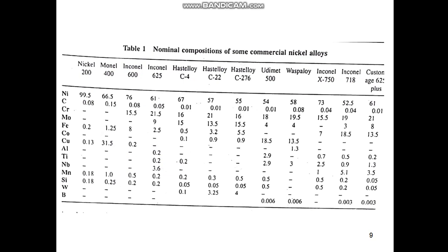This table provides the nominal composition of commercially available nickel-base alloys, ranging from Nickel 200, Monel 400, Inconel 600, Inconel 625, Hastelloy C4, C22, C276, Udimet 500, Waspaloy, Inconel X-750, Inconel 700, and Custom 625 Plus. You can see that nickel can be readily alloyed with chromium, molybdenum, niobium, silicon, tungsten, and boron to produce a variety of commercially useful alloys.